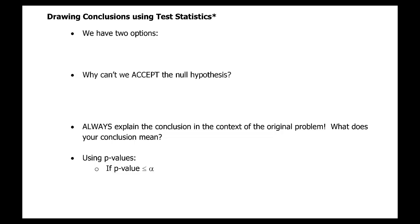In hypothesis testing we always have two options. We write our null and alternative hypotheses, and when we're done with a test and we have a conclusion, these are the two options: we can reject the null hypothesis, or we can fail to reject the null hypothesis.